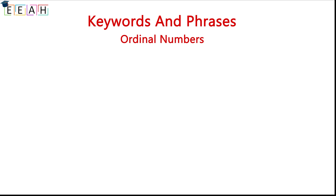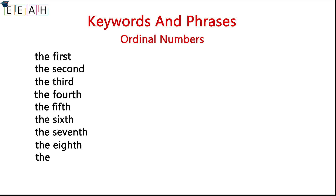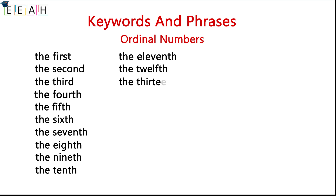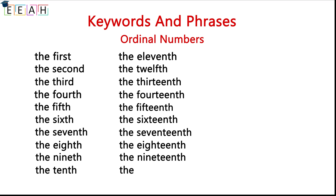Ordinal numbers: the first, the second, the third, the fourth, the fifth, the sixth, the seventh, the eighth, the ninth, the tenth, the eleventh, the twelfth, the thirteenth, the fourteenth, the fifteenth, the sixteenth, the seventeenth, the eighteenth, the nineteenth, the twentieth.